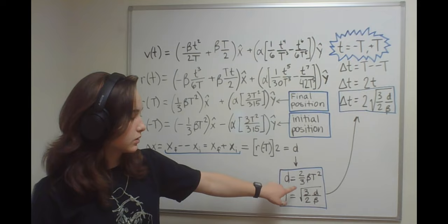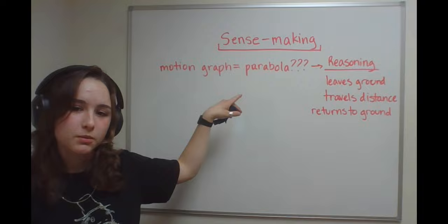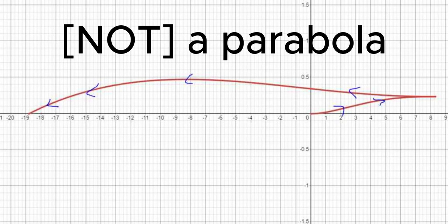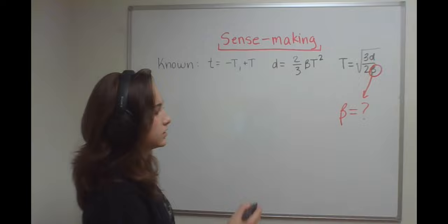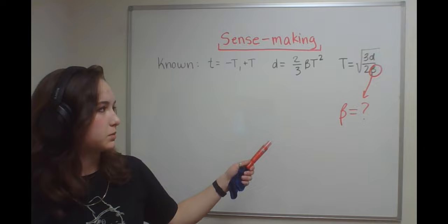So we've made sense of the position lost in the acceleration maps, but you still don't know what beta is and you don't know what alpha is either.